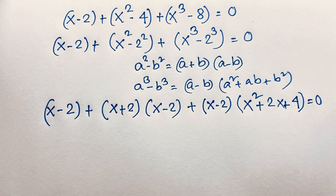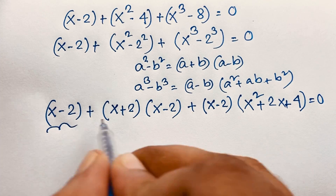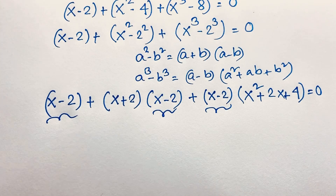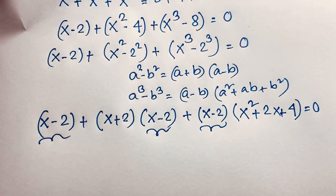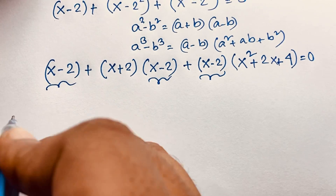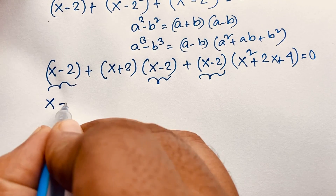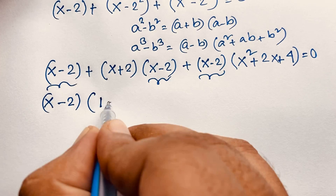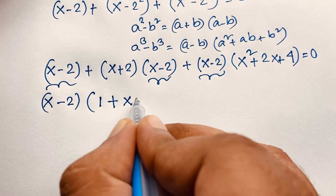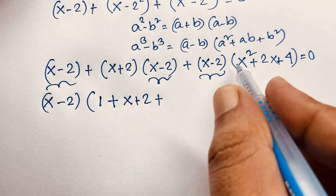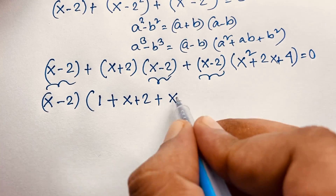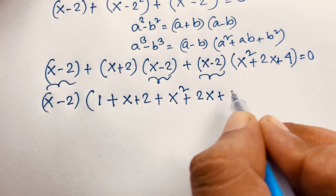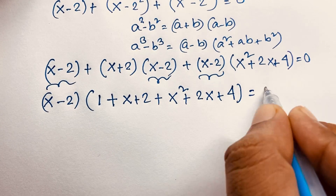We can see that x minus 2 appears in every factor, so x minus 2 is common. Factoring it out gives: x minus 2 times 1 plus x plus 2 plus x squared plus 2x plus 4 equals 0.